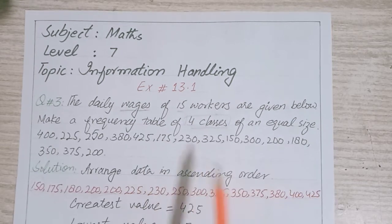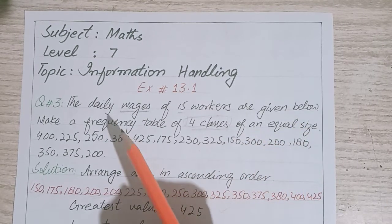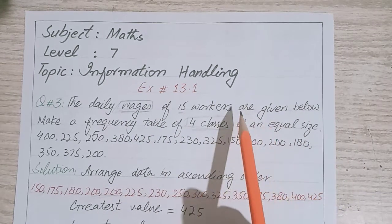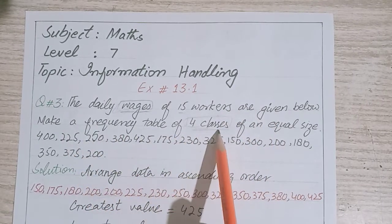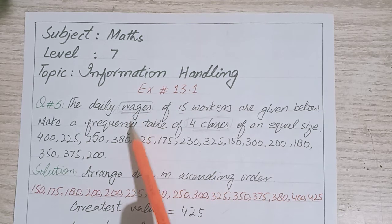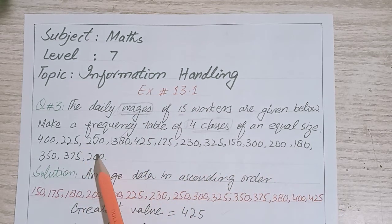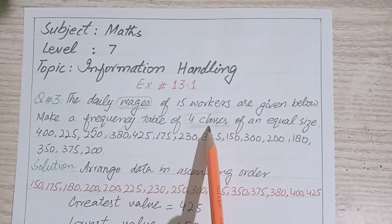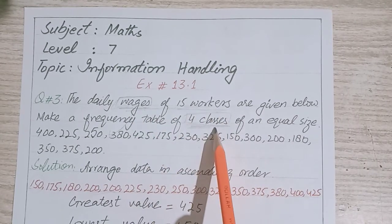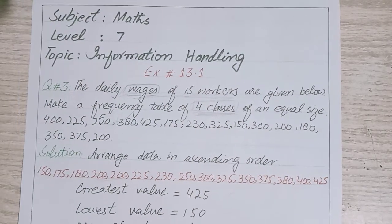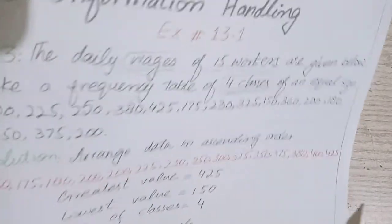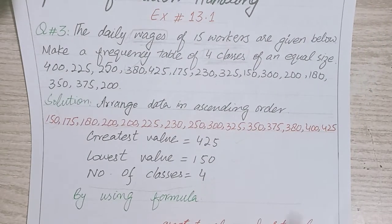Today we will discuss question number three. In question number three, the daily wages of 15 workers are given. You can see here the given data - the wages of 15 workers. You have to divide them into four classes.